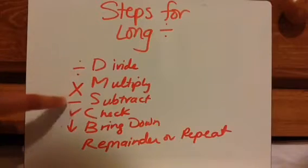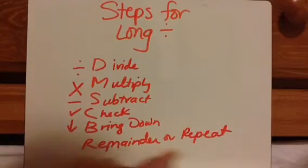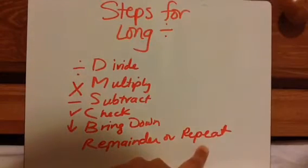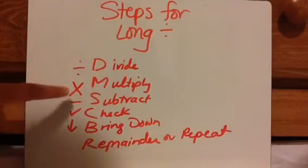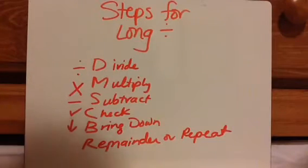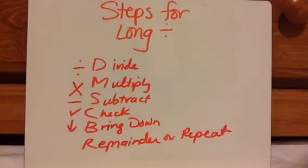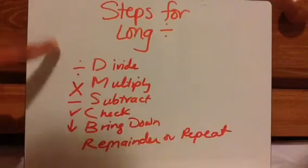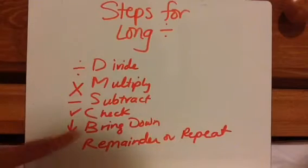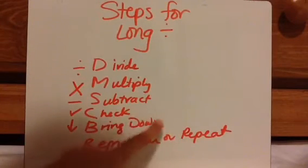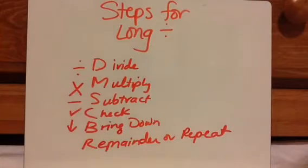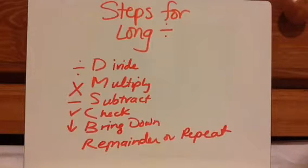If you have to go through the steps again, you're going to do divide, multiply, subtract, check, bring down. Repeat your steps, and then you'll do divide, multiply, subtract, check, bring down, and then it'll be remainder. If you end up repeating again, you keep repeating until you have nothing left to bring down, and then it's your remainder. So you're going to be hearing me use that terminology again and again through the video, so just be familiar with it.